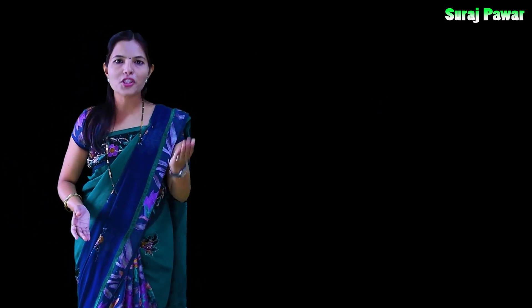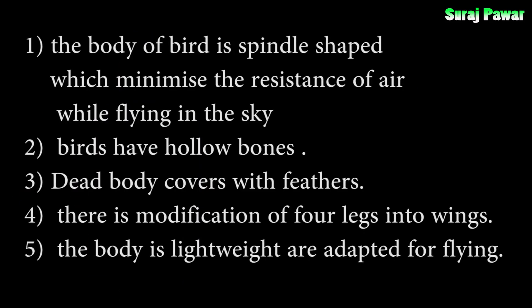Let's quickly revise the adaptations in aerial animals. First, the body of birds is a spindle shape to minimize the resistance of air while flying. Second, their bones are hollow. Third, the body is covered with feathers. Fourth, there is modification of four legs into wings. And last, their body is lightweight and adapted for flying.